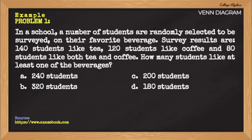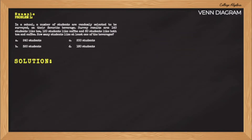We will now try to solve example problems with that concept in mind. So we have here example problem number one. In a school, a number of students are randomly selected to be surveyed on their favorite beverage. Survey results are: 140 students like tea, 120 students like coffee, and 80 students like both tea and coffee. How many students like at least one of the beverages? We will solve this by constructing a Venn Diagram and filling it with those values given in the problem.